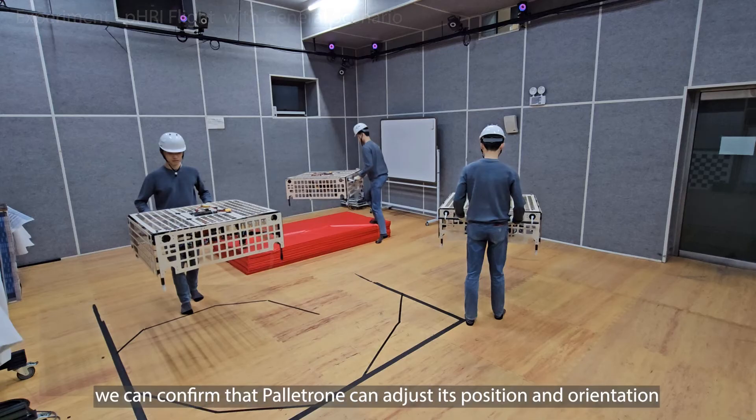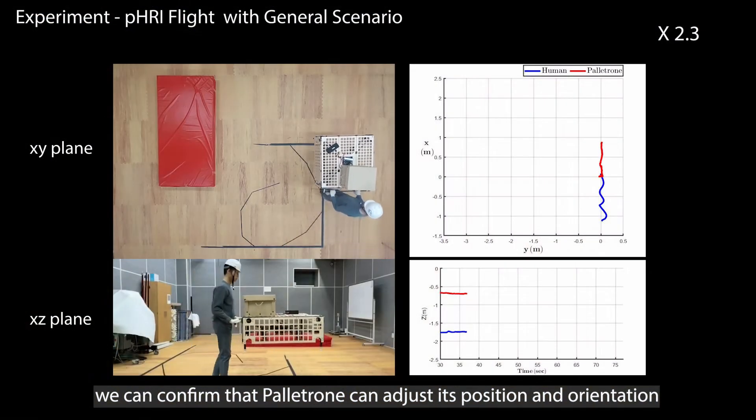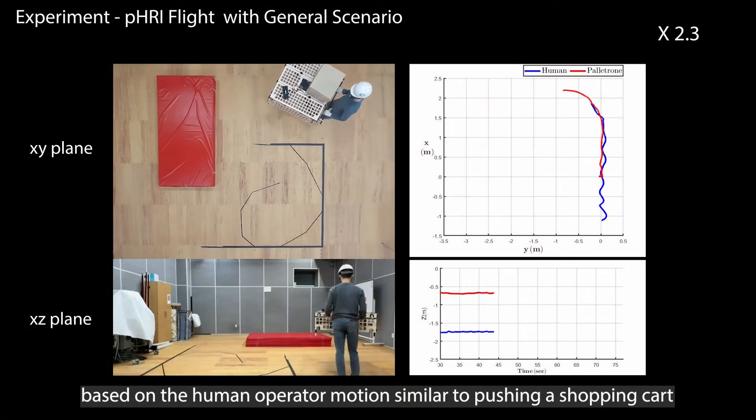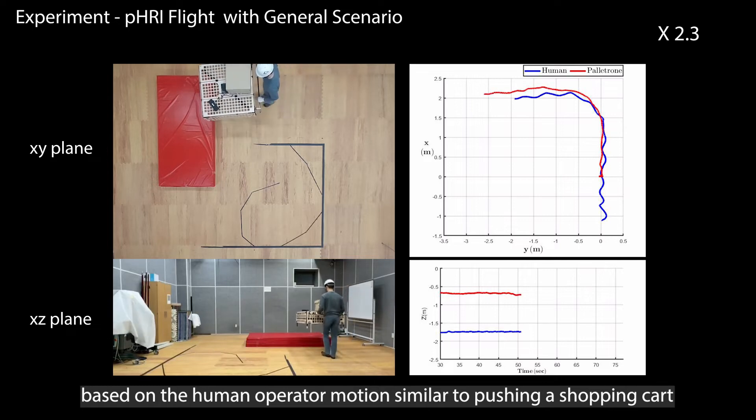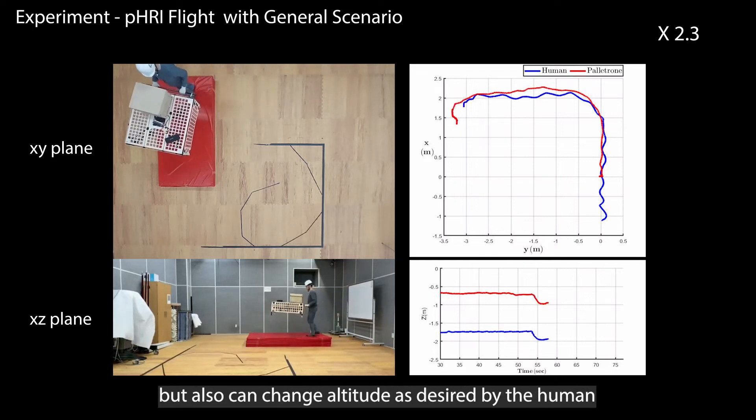With this experiment, we can confirm that Palletron can adjust its position and orientation based on the human operator motion similar to pushing a shopping cart, but also can change altitude as desired by the human.